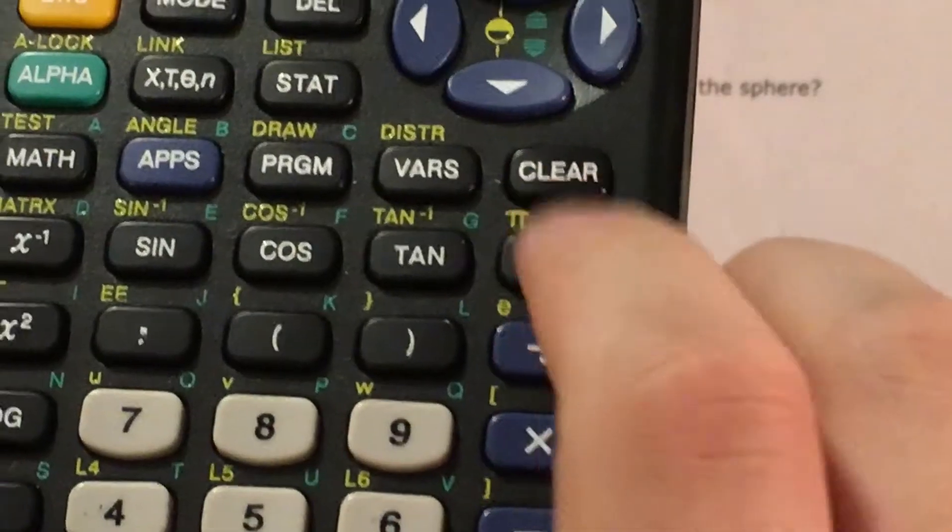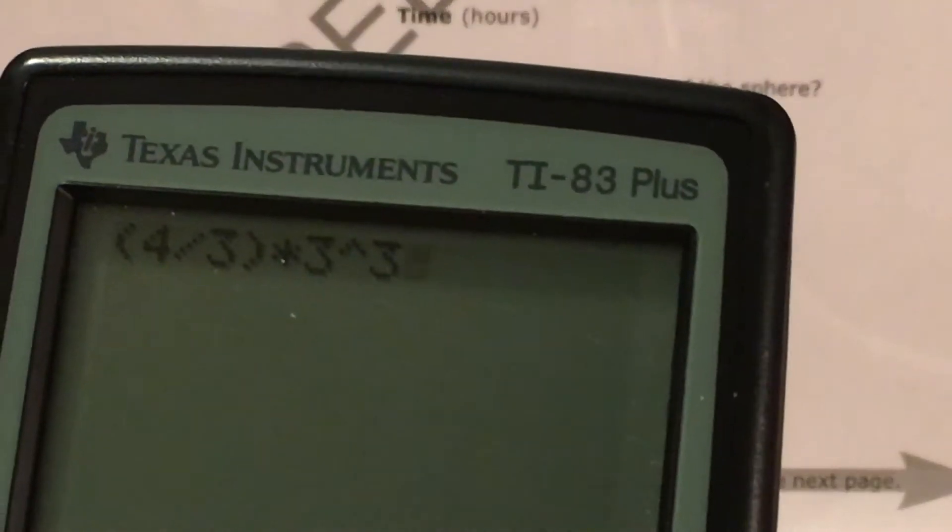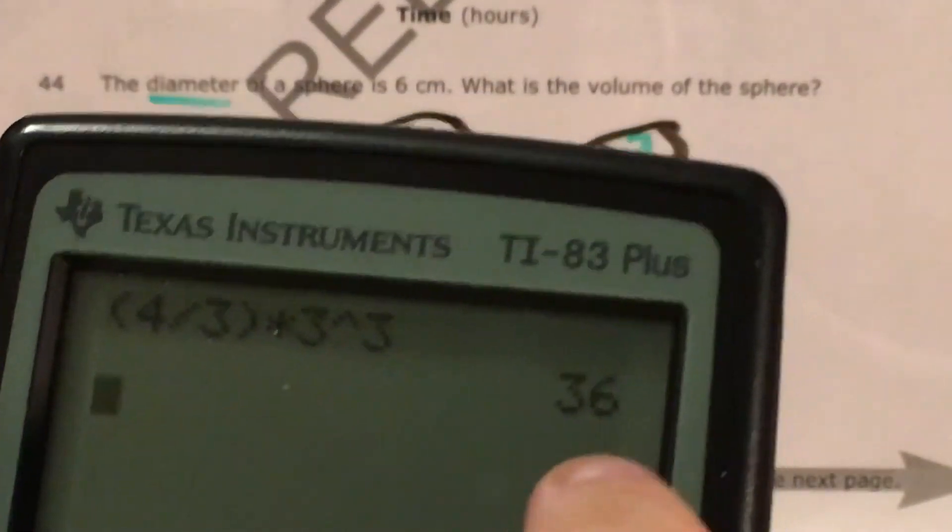And this little caret button here is how my calculator reads an exponent. And four thirds times three cubed gives me 36.